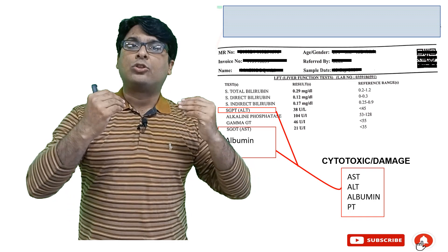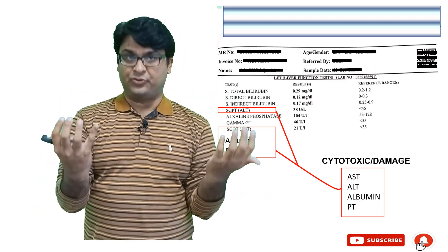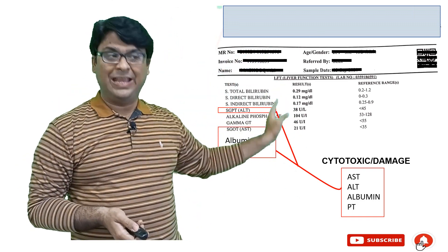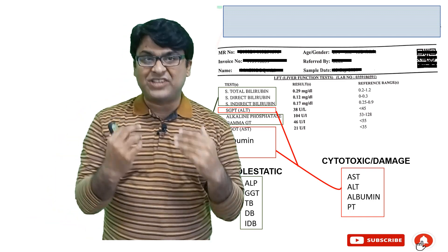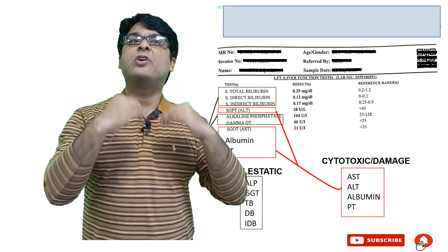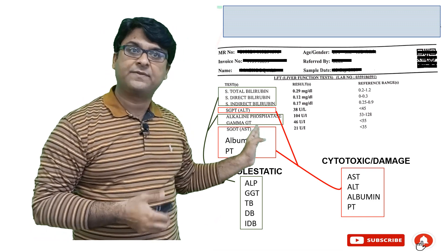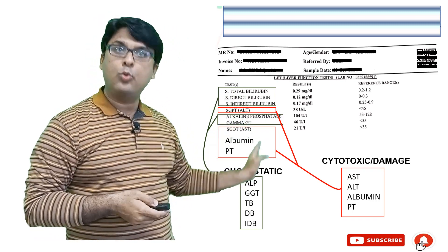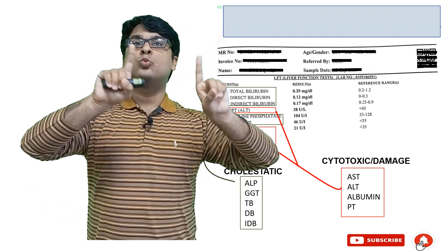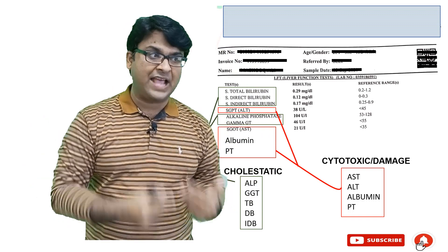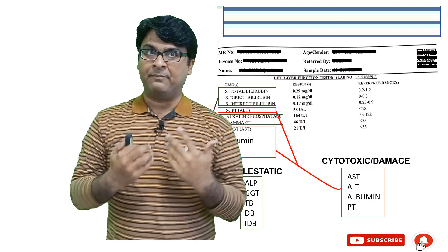Analyzing the whole report, there are two types of parameters. The first type is what we call cytotoxic or damage-associated parameters — those affected whenever there is liver cellular injury — and these include AST, ALT, albumin, and prothrombin time. Then there are markers associated with cholestasis, which is any blockage of the liver ductular system. Those markers are alkaline phosphatase, gamma glutamyl transferase (GGT), total bilirubin, direct bilirubin, and indirect bilirubin.